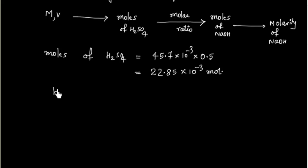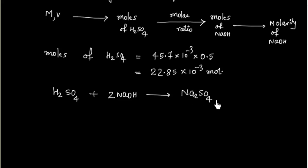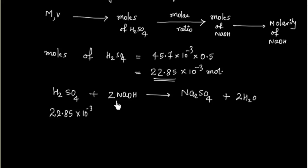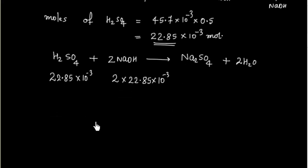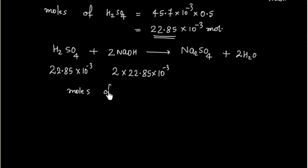Now we can write the reaction: H₂SO₄ + 2NaOH → Na₂SO₄ + 2H₂O. We know the moles of H₂SO₄ are 22.85 × 10⁻³. Since 1 mol of H₂SO₄ reacts with 2 mol of NaOH, the moles of NaOH are 2 times 22.85 × 10⁻³, which equals 45.7 × 10⁻³ mol.